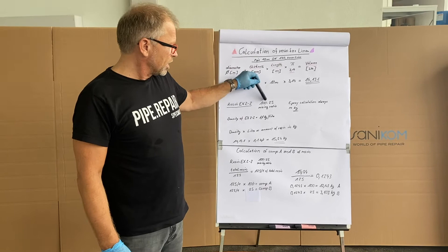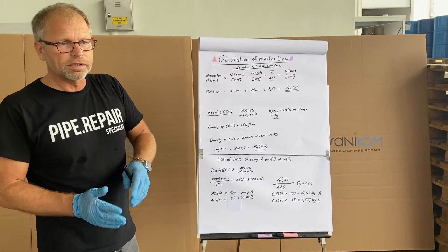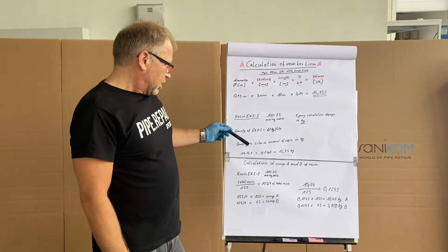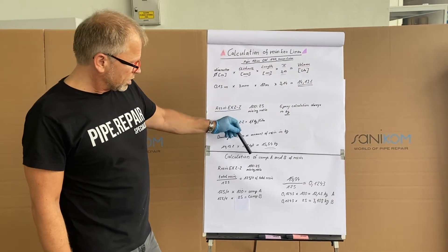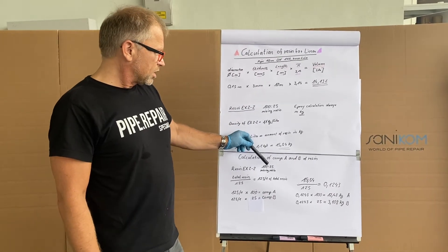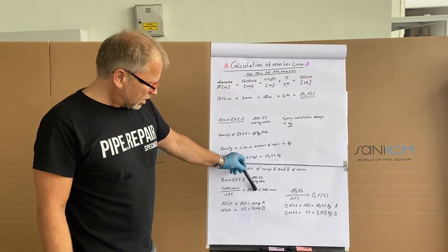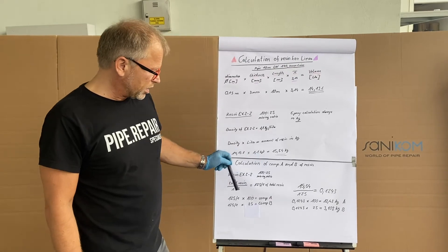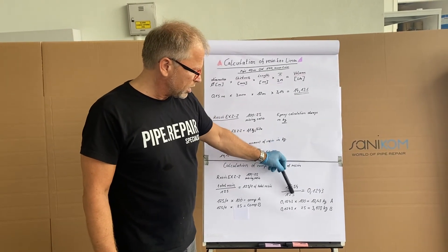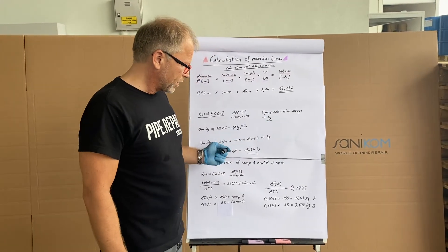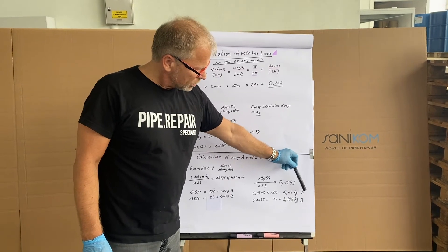The mixing ratio is 100 to 25. So how much of this 15.54 kilogram is resin and how much is hardener? I divide the total resin by 125 because of the mixing ratio of 125. That means it is 1/125th part of the total resin. Then one part of this result multiplied by 100 is component A, multiplied by 25 is component B. Total amount of resin divided by 125 is 0.1243. Multiplied by 100 is 12.43 kilogram — that's component A.